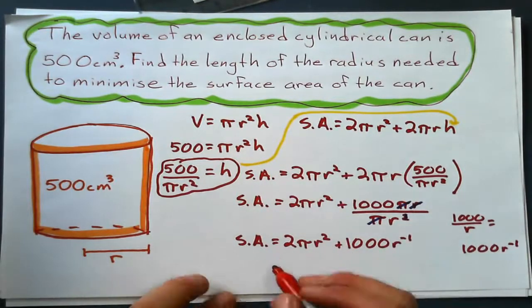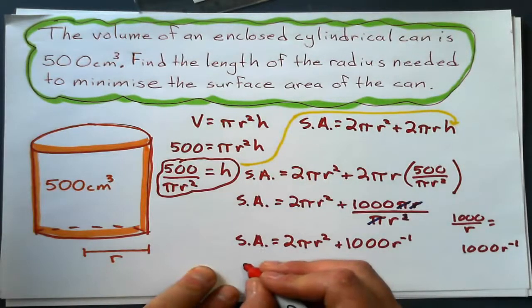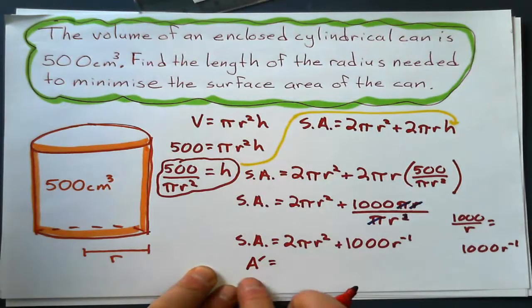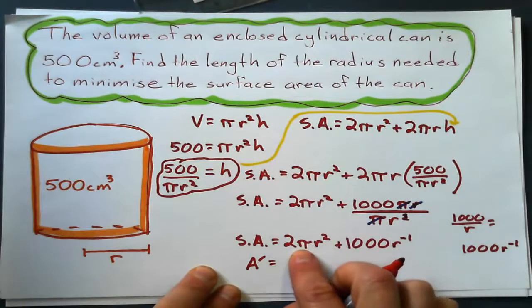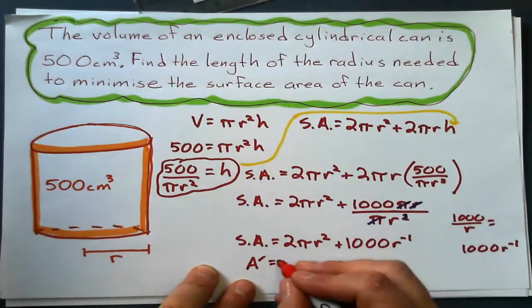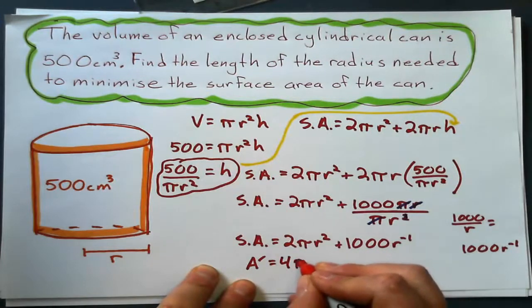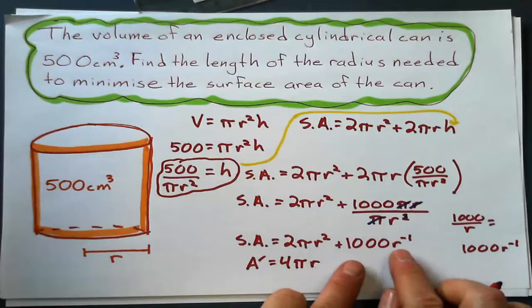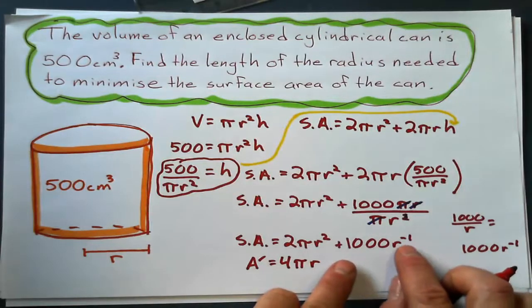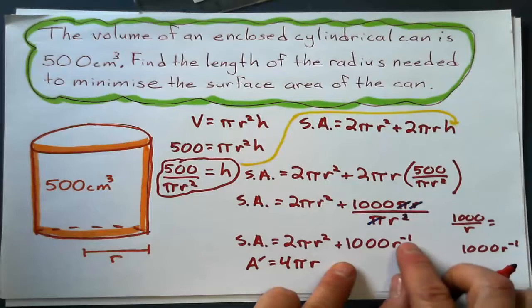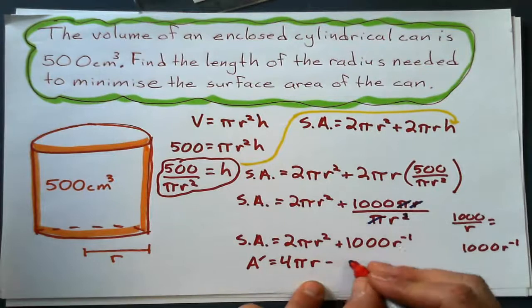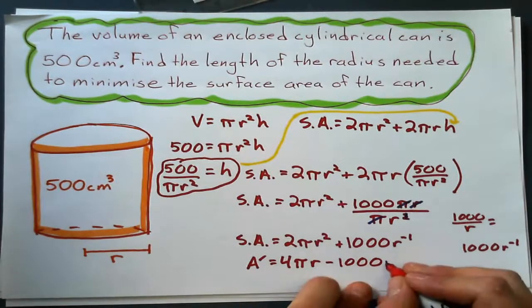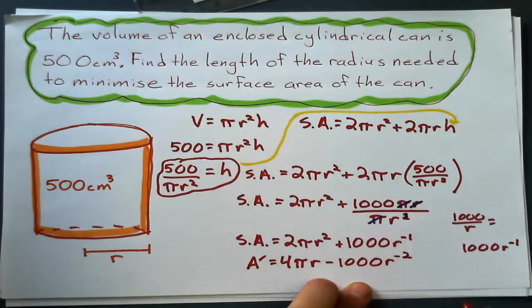The maximum or minimum is going to be when the gradient function, surface area, I'm just going to call it a prime now. I differentiate it. Don't forget, pi is a constant, not a variable. So, when I differentiate this, this turns to 4 pi r. And when I differentiate this, here's the tricky one. Differentiate it. Bring the exponent, multiply it by 1000. So, negative 1 times 1000 is negative 1000. And I take 1 off of the exponent, making that negative 2.